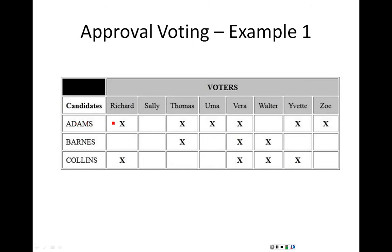So in this case, Adams, Richard, Thomas, Uma, Vera, Yvette, and Zoe all thought that Adams would be an okay candidate and would be happy enough if Adams were elected. So that's one, two, three, four, five, six votes that would approve Adams as a winner.